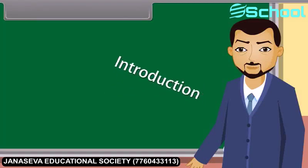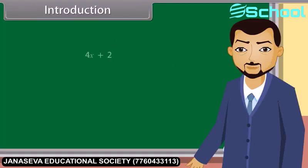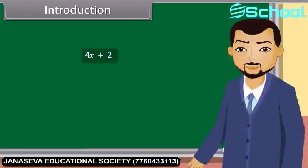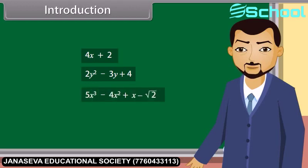Students, look at this polynomial. What can you say about this? This is a polynomial in the variable x of degree. Similarly, 2y squared minus 3y plus 4 is a polynomial in the variable y of degree 2, and 5x cubed minus 4x squared plus x minus square root 2 is a polynomial in the variable x of degree 3.